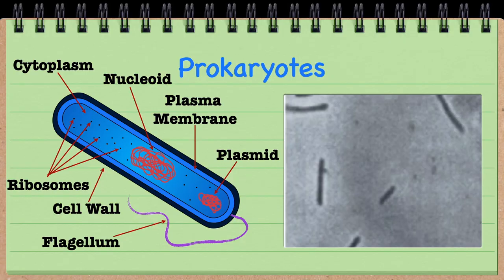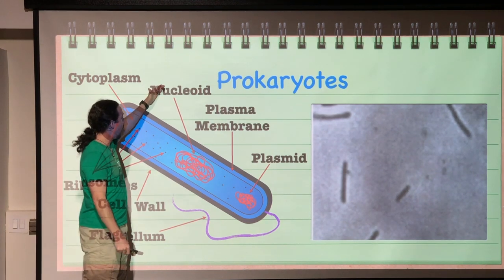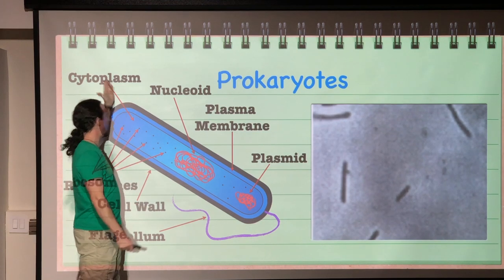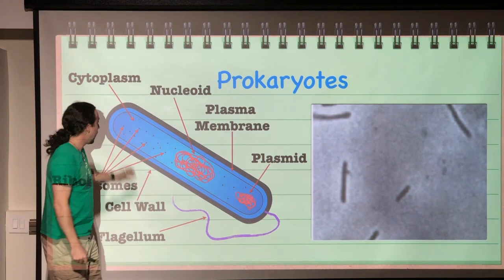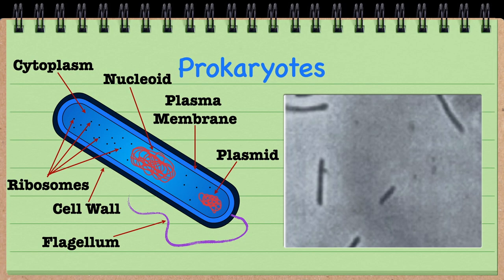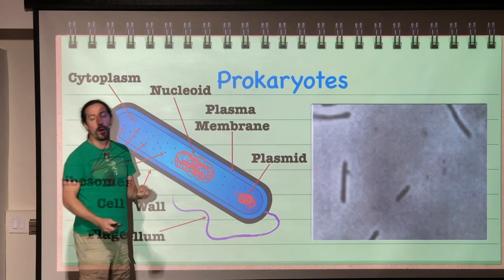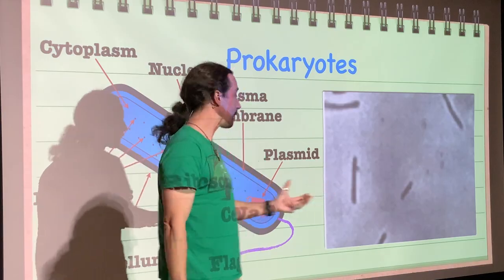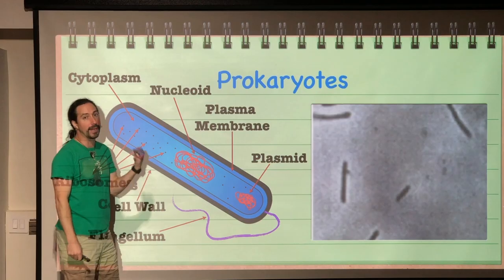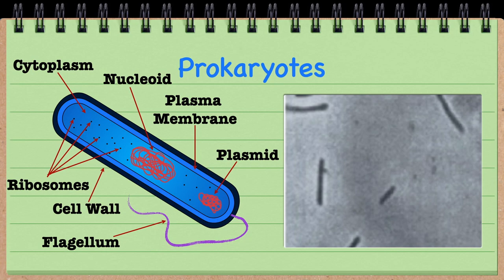Looking at a generic prokaryotic cell, you have the outer membrane and then DNA just floating inside the cytoplasm, which is called the nucleoid. Cytoplasm simply means the cell's internal contents — everything within the plasma membrane. The key feature is the openness on the inside: no internal compartmentalization, no membrane-bound organelles. The only membrane is the plasma membrane, which acts as the barrier for the cell itself.